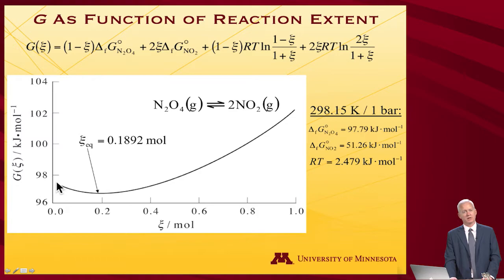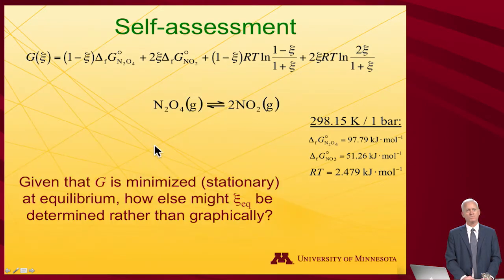There's nothing especially interesting about those numbers, they just are what they are. I know what RT is, so I plug all this in and I just plot free energy as a function of reaction extent. And what one finds is that at extent zero, where it's pure N2O4, that is not equilibrium. The reaction proceeds, proceeds, proceeds, hits a minimum in the free energy. Were it to proceed any further at this temperature, 298.15 Kelvin and one bar, the free energy would go up, so it doesn't, it stops. It has come to equilibrium and it's at 0.1892 reaction extent moles that that equilibrium occurs.